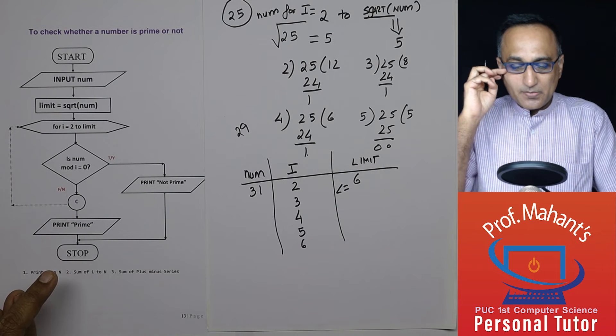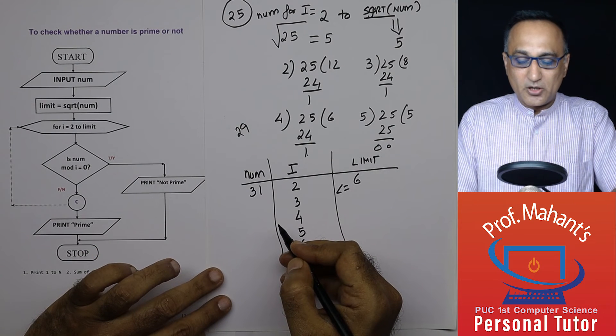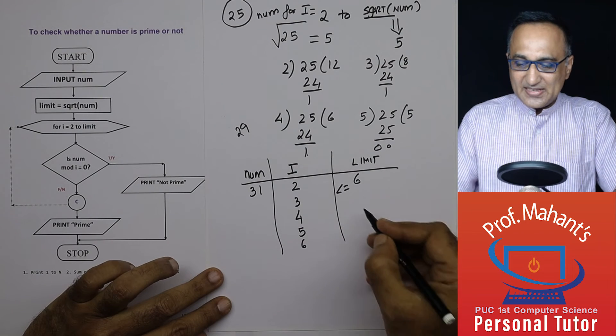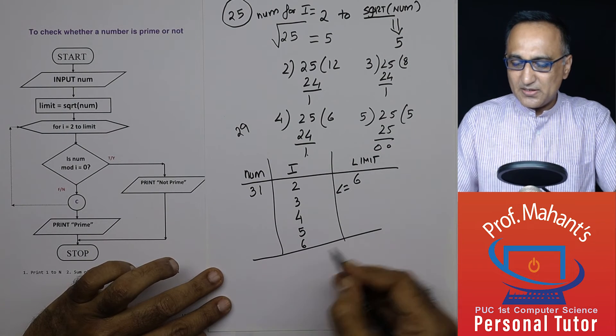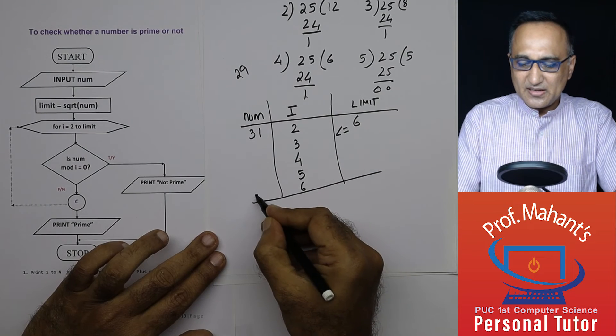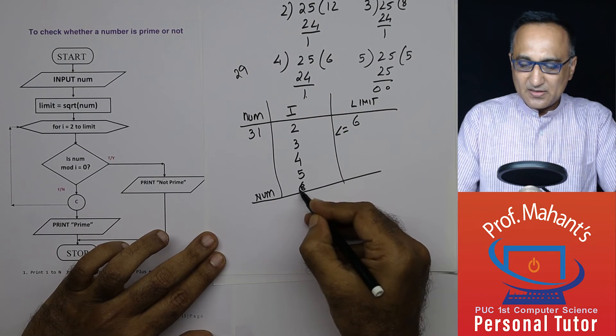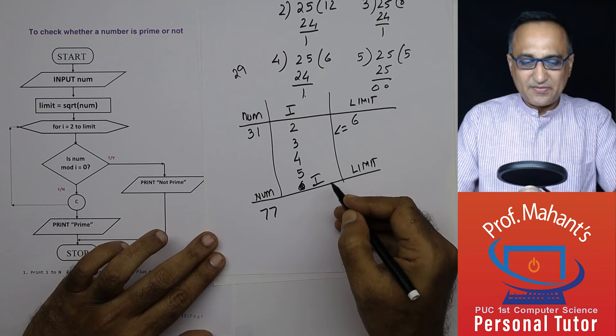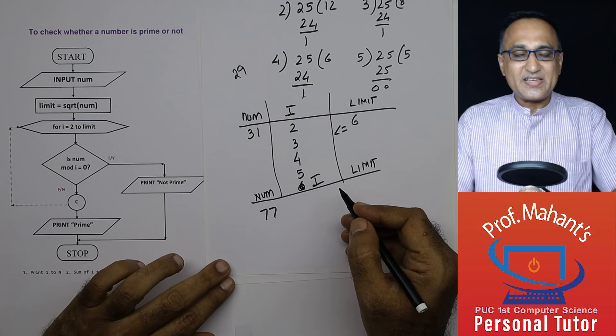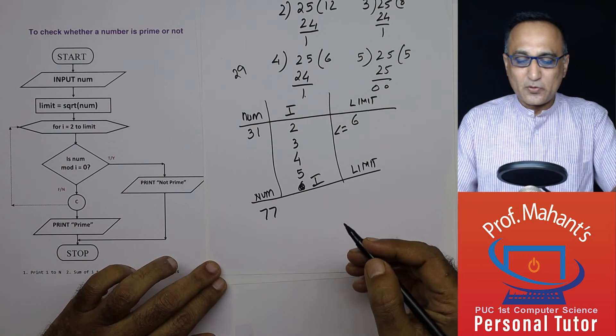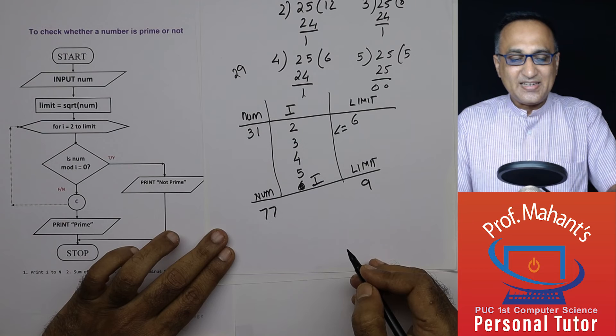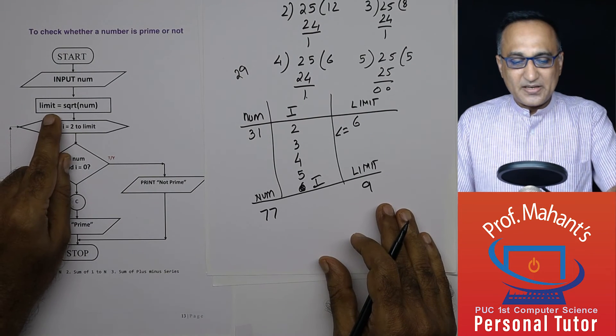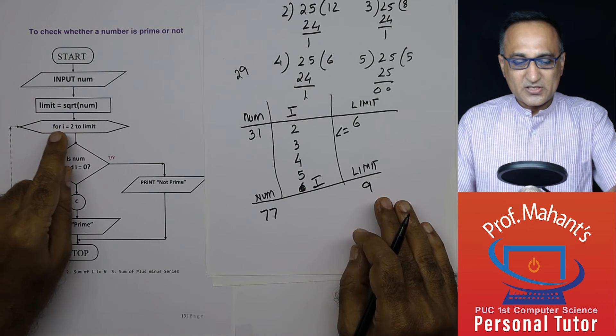Now let's take another number where it will get divided and it will not turn out to be a prime. Let us say we take the number 77. Let's take a number 77. This is number, this is i and this is limit. So number is 77. Square root of 77 is 8, 8 times 8 is 64. 9 times 9 is 81. So approximately 9 is the last number which can divide 77. Limit is equal to square root of this thing. We start from 2.